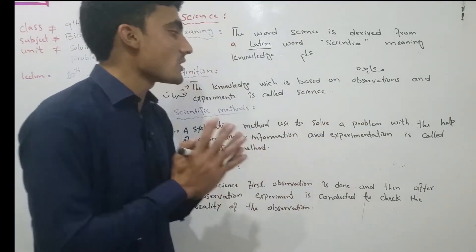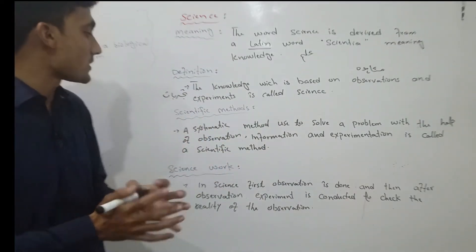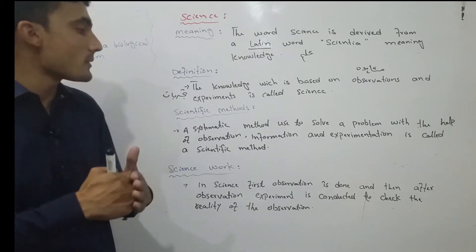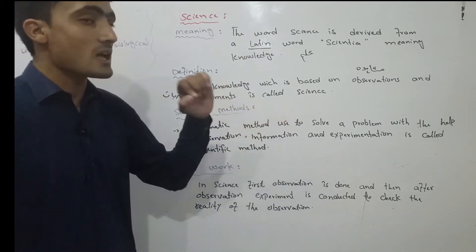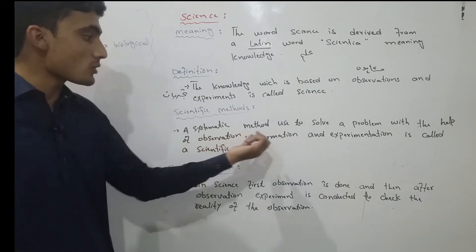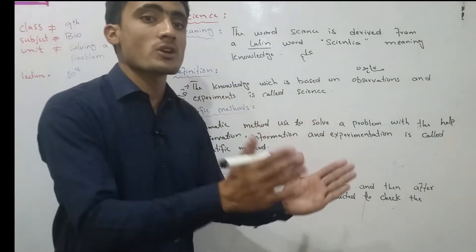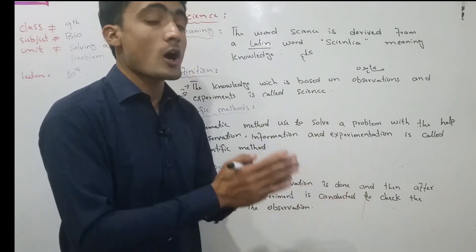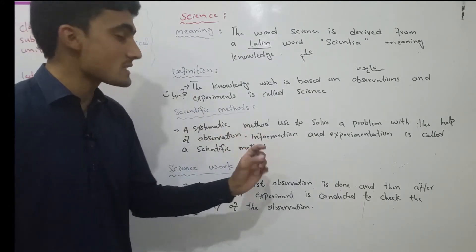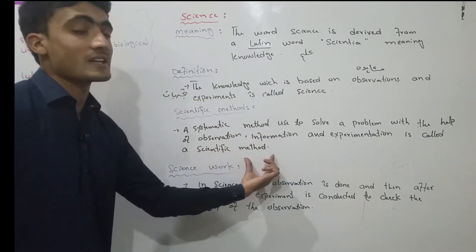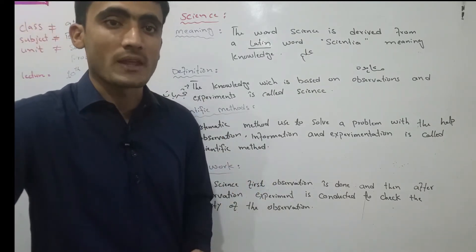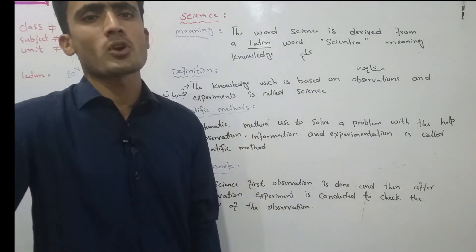A biological problem is solved with the help of observation. First we do observation, collect information, and then we conduct experiments. This research gives us results. These steps together are called the scientific methods we use to solve a biological problem.